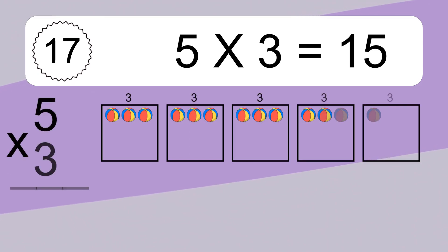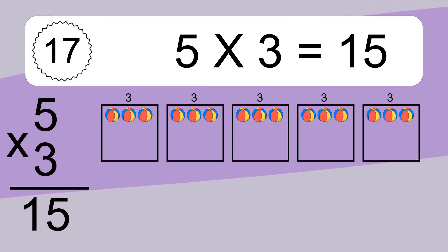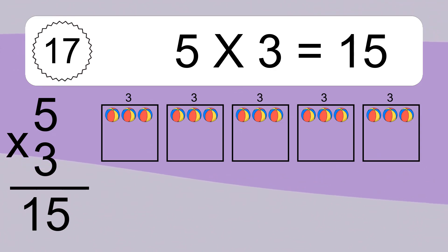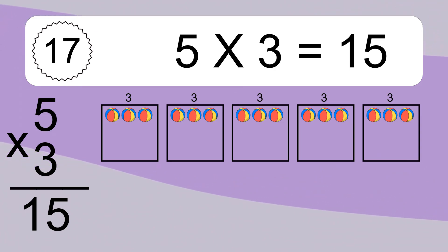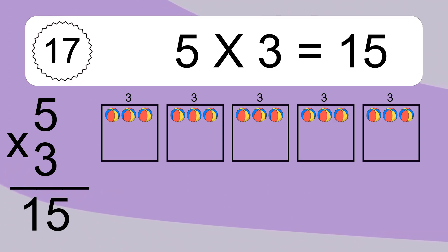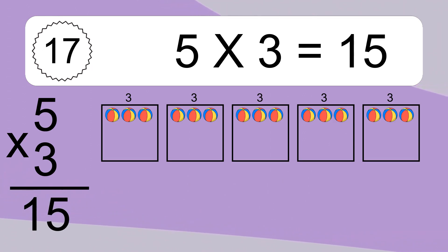5 x 3 equals what? 5 x 3 equals 15. We have 5 boxes, and each box has 3 colorful balls inside. If you count all the balls in all the boxes together, you will have 5 x 3 balls. This equals 15 balls.